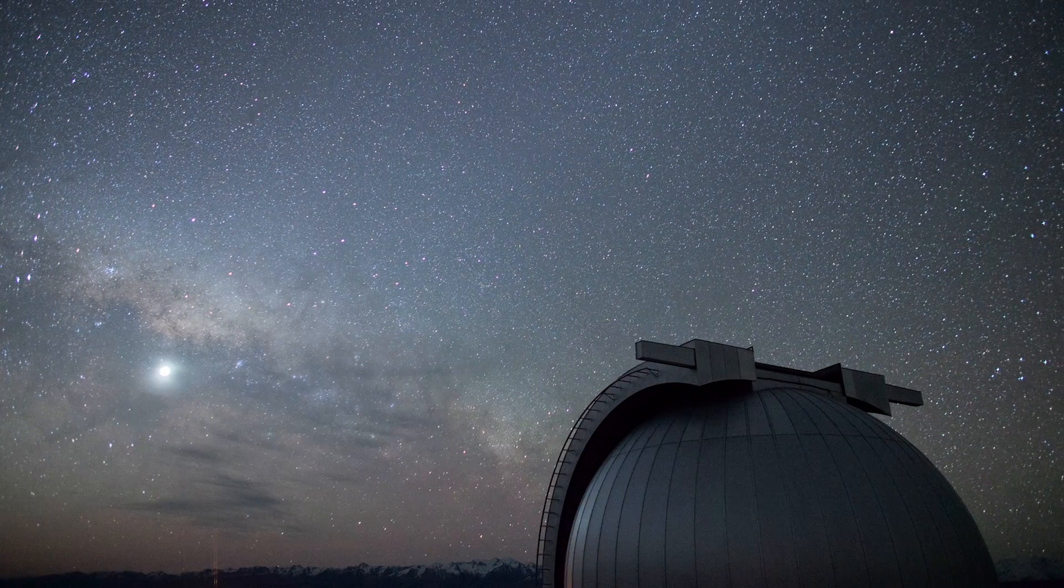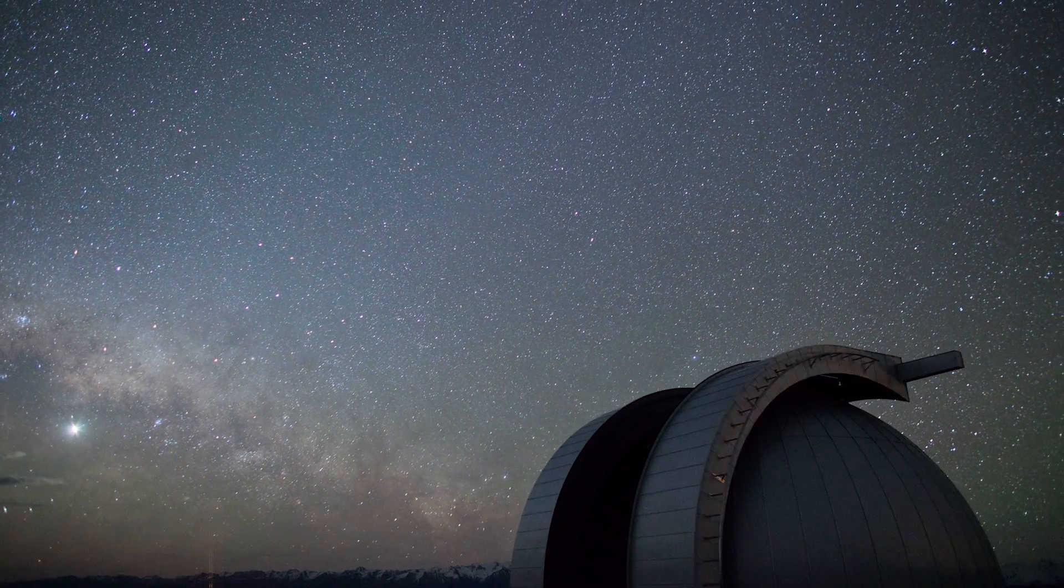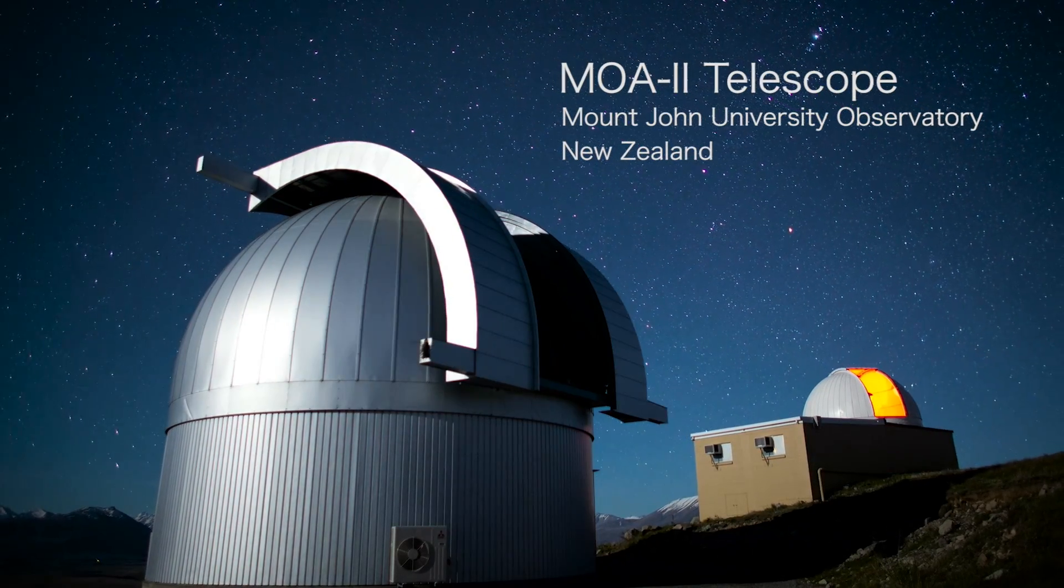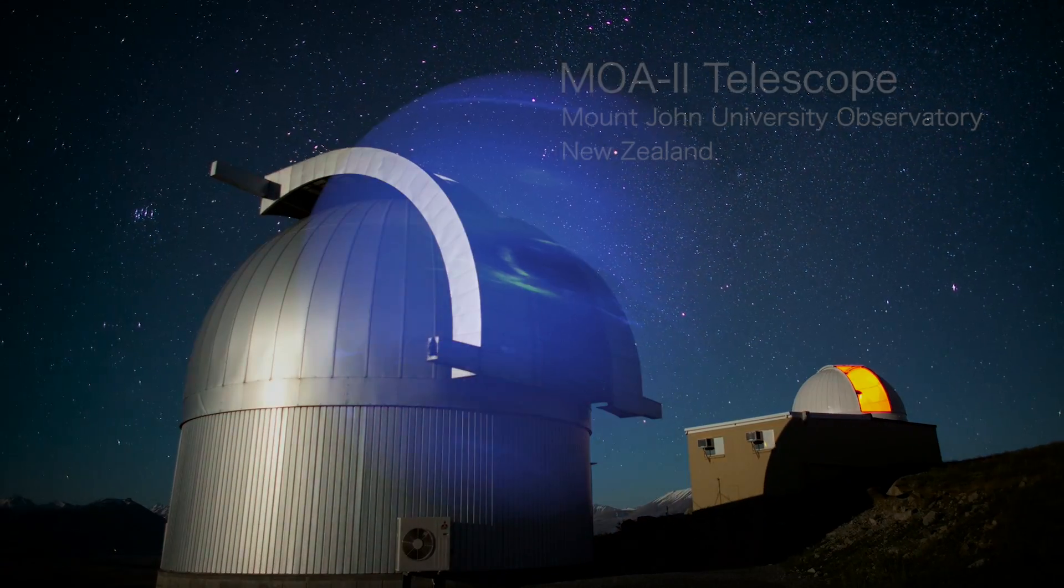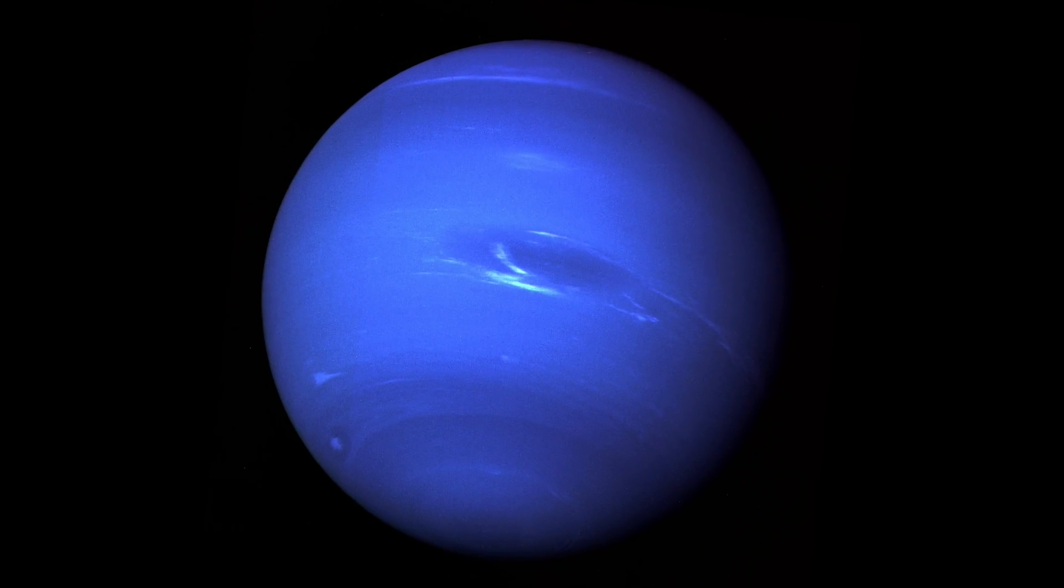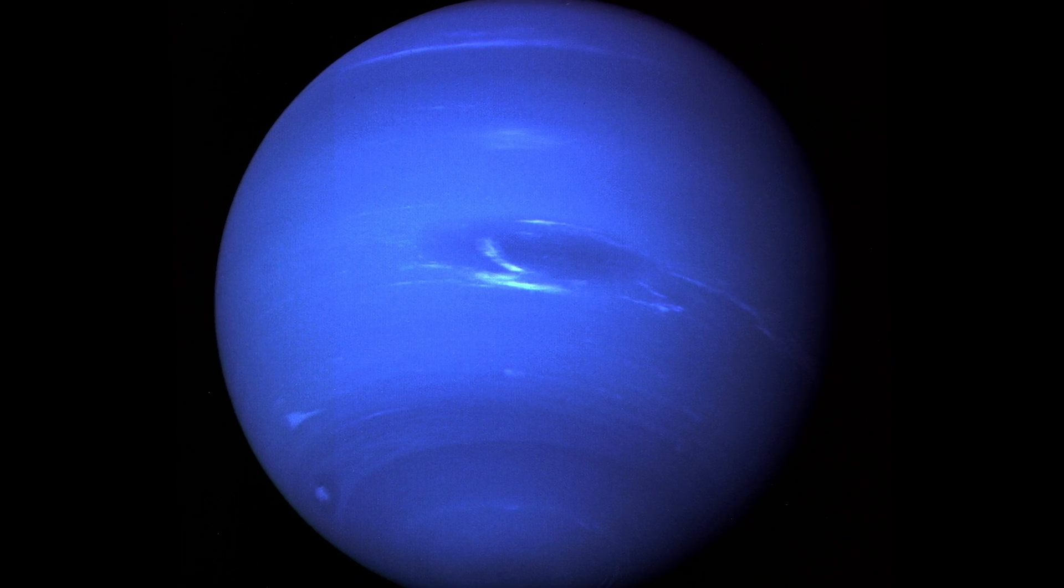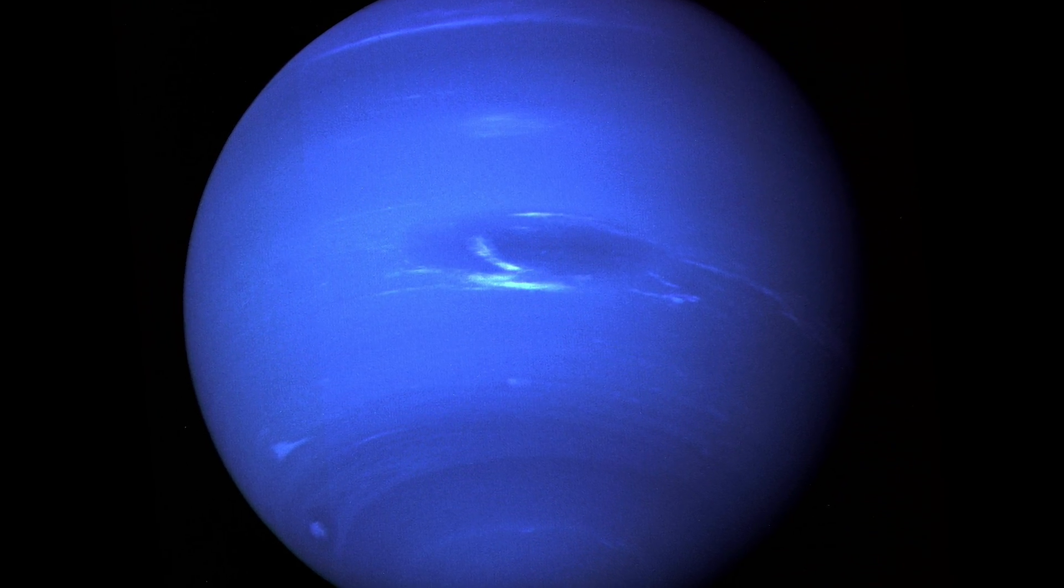A technique called microlensing promises to clarify the picture. A recent analysis of six years of data from the MOA-2 ground-based survey concludes that exoplanets similar in mass and probably composition to Neptune are likely the most common worlds in the outer reaches of planetary systems.